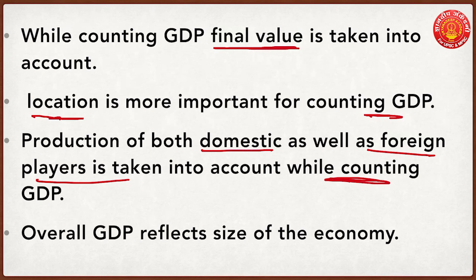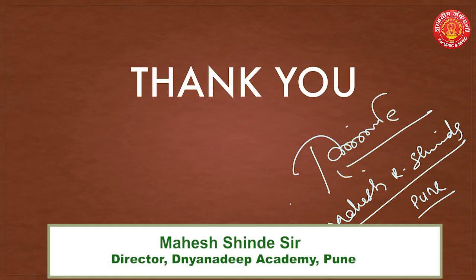Overall GDP reflects the size of the economy. For example, if Adam Gilchrist plays a match in India and earns 10,000 rupees, those rupees are part of Indian GDP. But if Sachin Tendulkar plays in America and earns 15,000 rupees, those are part of American GDP — not Indian GDP. Location and place of production matter more than who produced the goods and services. The total value of goods and services produced in our economy is our GDP. Keep tuned to watch all the lectures — thank you very much, have a good day.